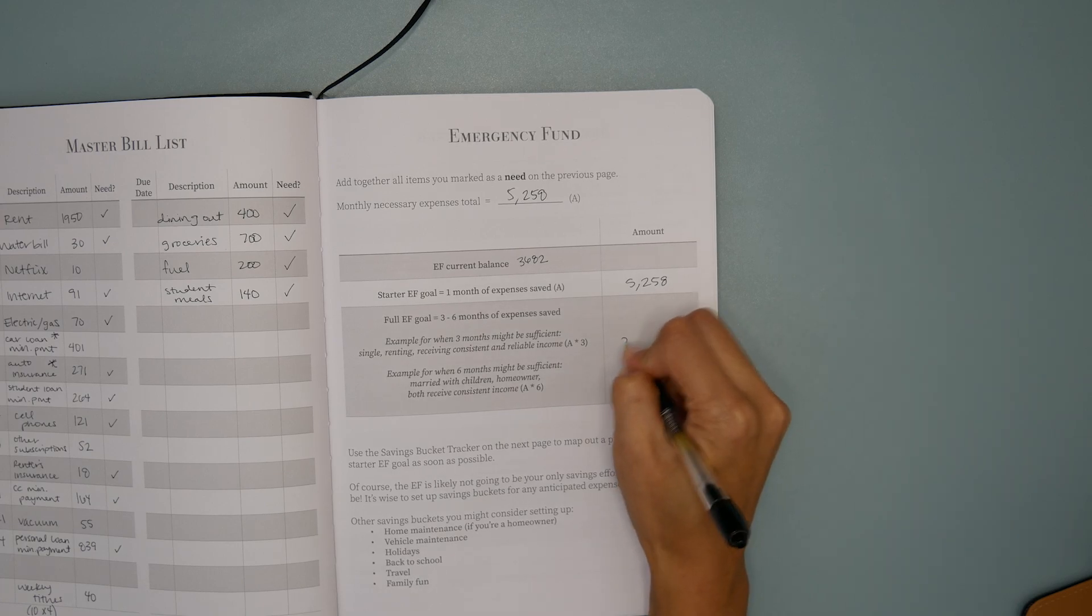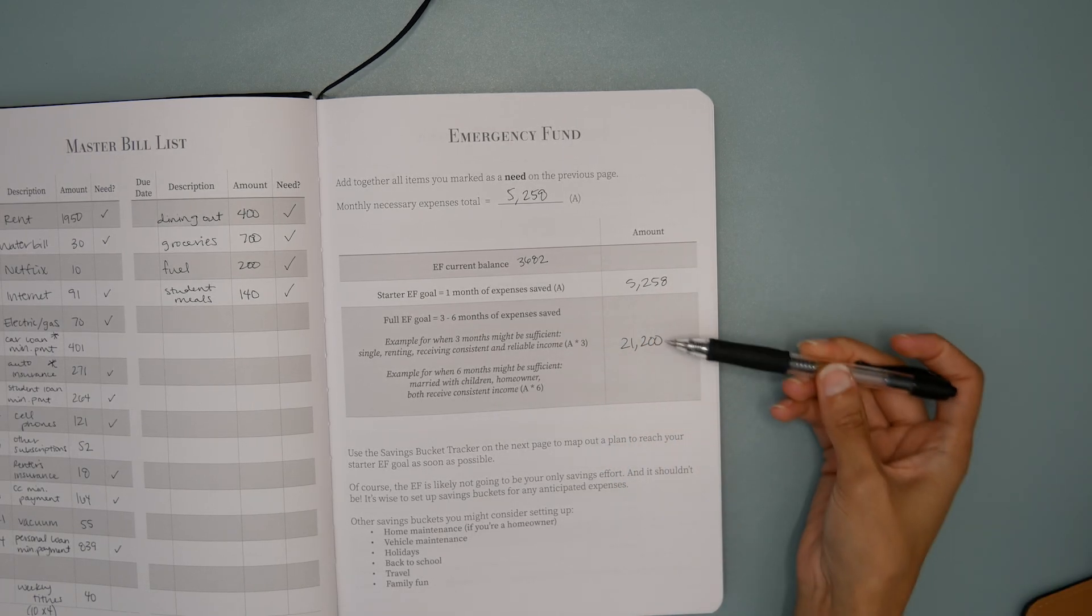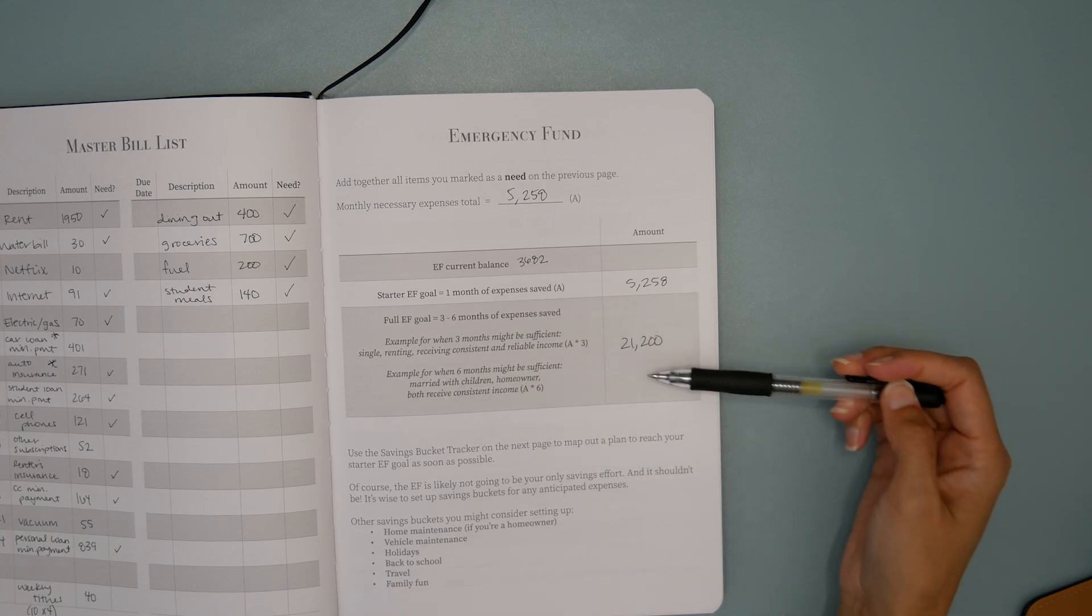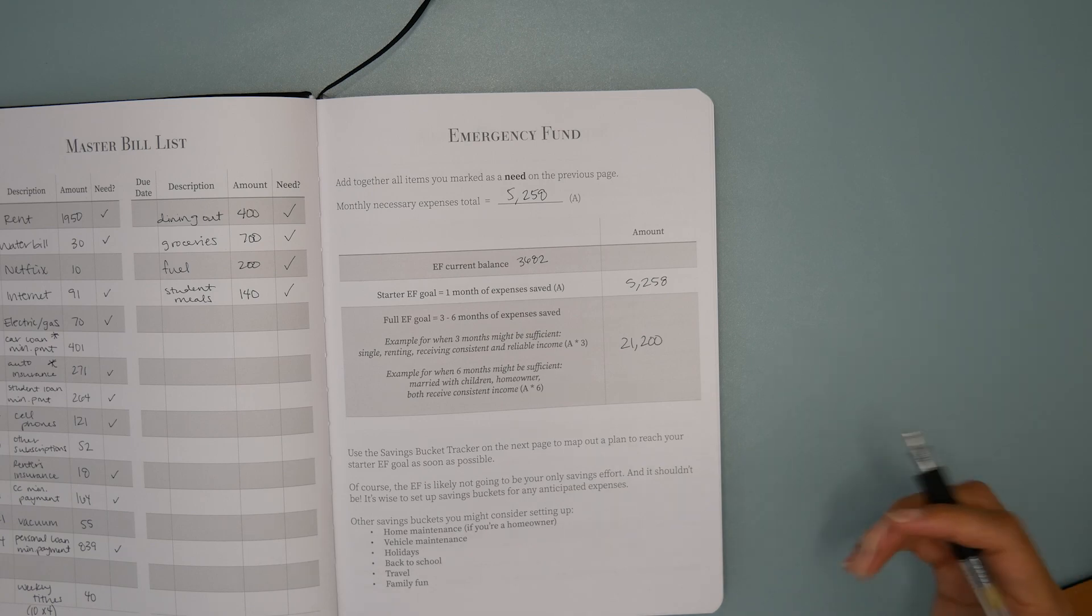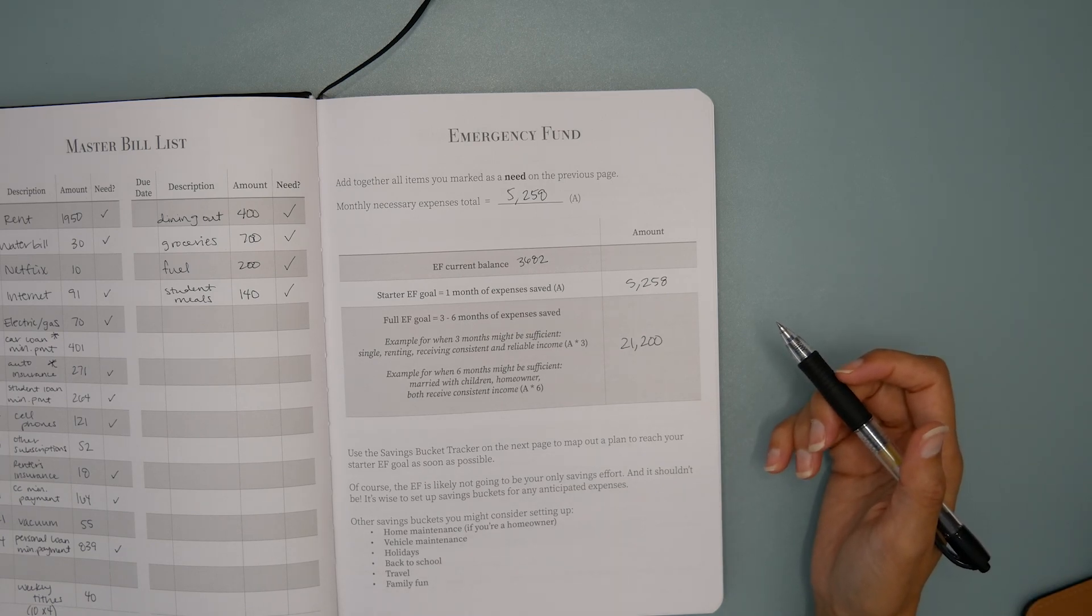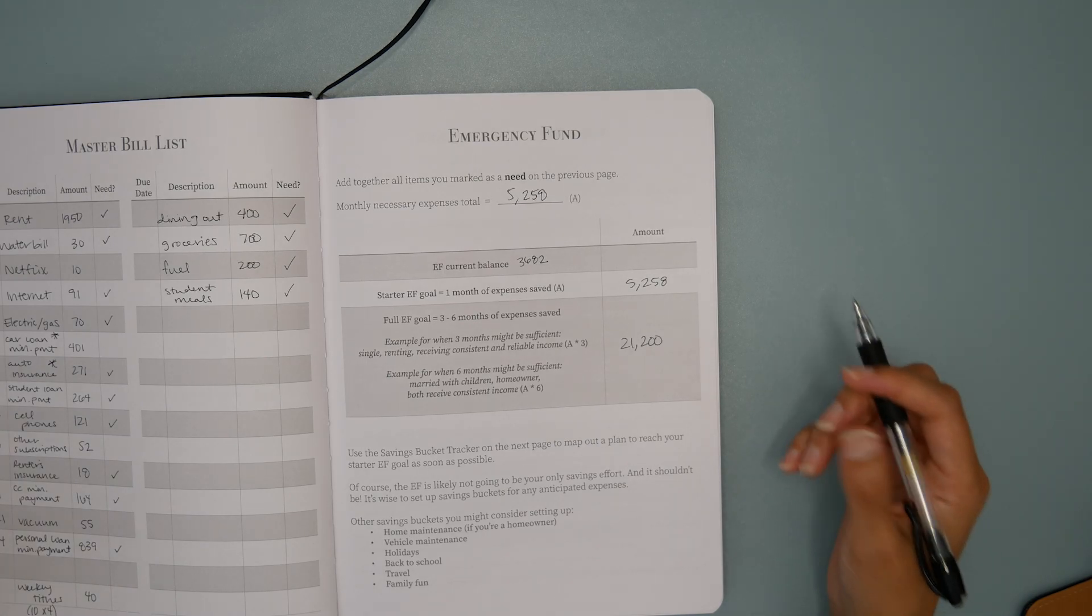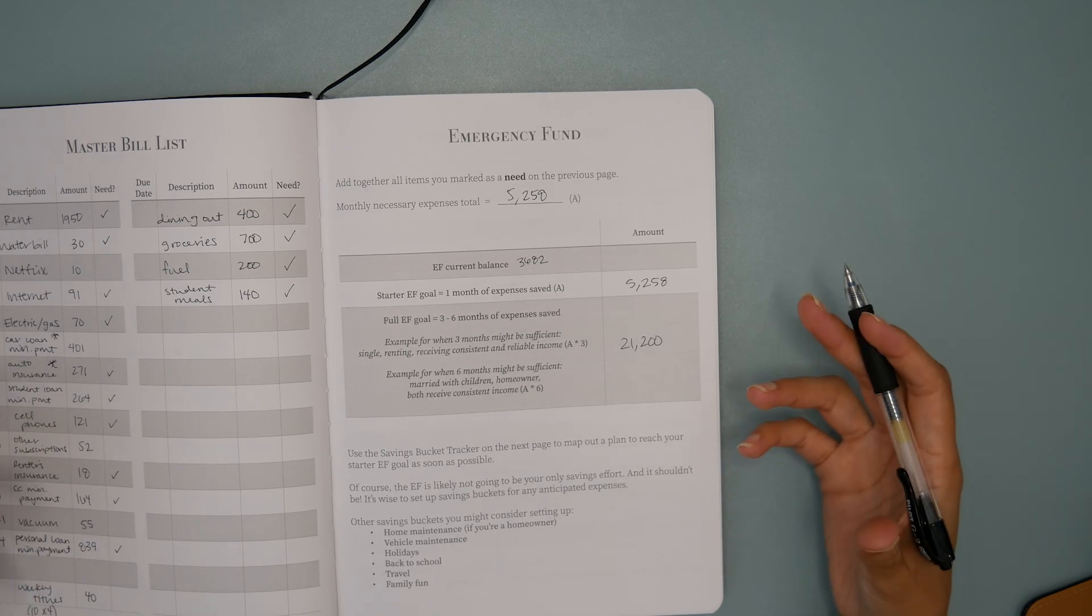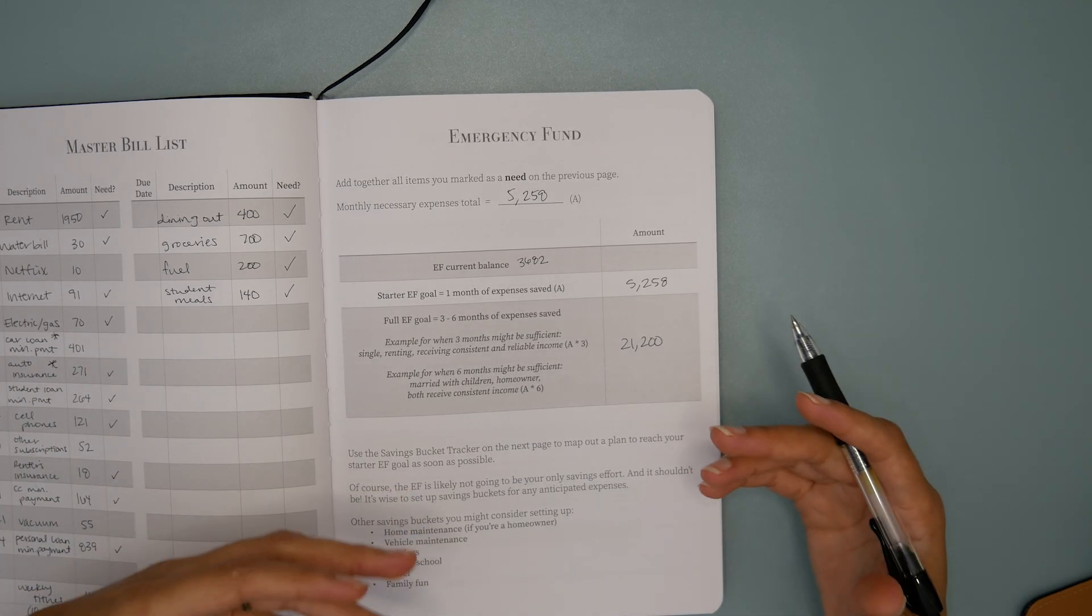If we take about $5,300 and multiply that by four, we're looking at $21,200. That would be her full, healthy emergency fund goal representing four months of core expenses saved. Now, if you've been with me for a while, you know the next thing I'm going to say, which is we need to set up more savings buckets. It is totally okay and very common to have five, ten, a dozen savings buckets because a lot of us are saving for multiple things at the same time.